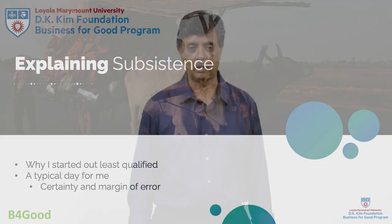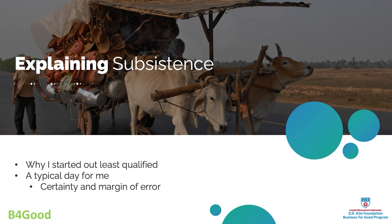Am I going to have the income for my next meal? Where is the water going to come from? Where is the cooking fuel going to come from? And so on. Let's get into what it means to live in subsistence marketplaces — what it means to have low income and associated characteristics such as low literacy.